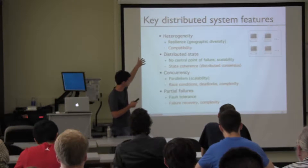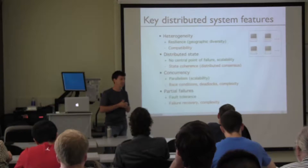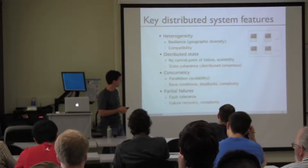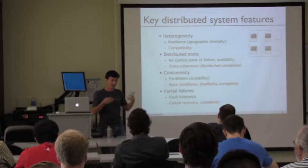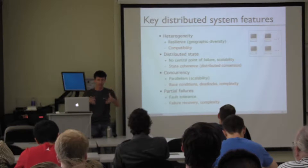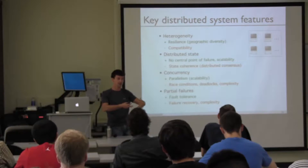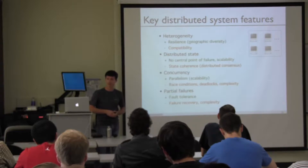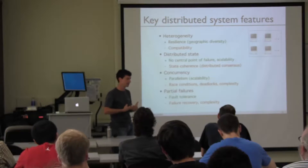The first feature is heterogeneity. A distributed system tends to include many different kinds of computers, many kinds of networks, and if computers are spread around the world you get geographic diversity. All of this diversity makes the system more resilient — if a data center goes down on the west coast, I still have one on the east coast, so I can survive that failure. On the other hand, you have the difficulty of compatibility: if you include different kinds of things, you have to make them interact, and that's a really challenging problem.